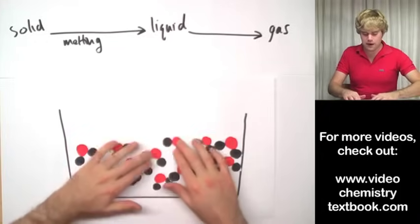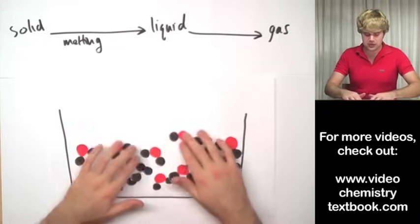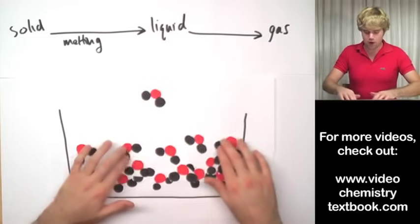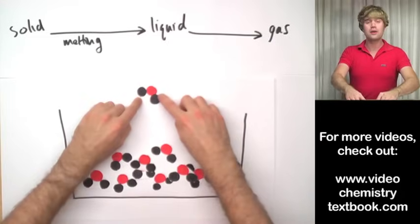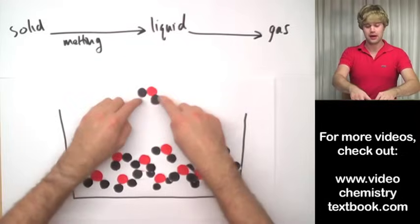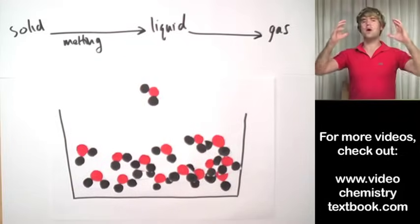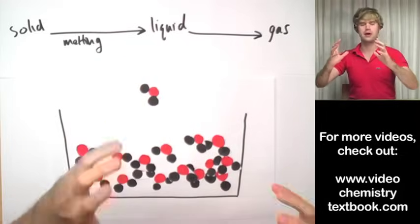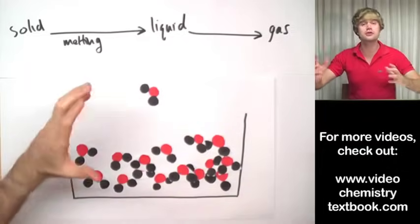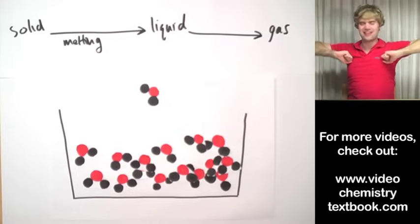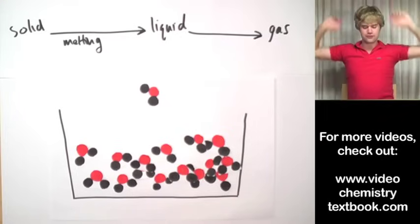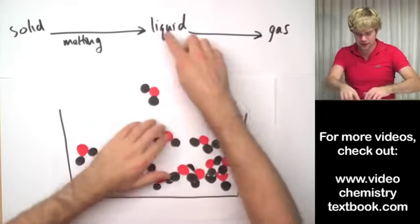that every once in a while, one of them is going to be moving so fast that it's able to jump right out of the liquid. And when it does so, it's going to become a gas. It's going to jump out here into the air. This is like a wild, crazy mosh pit that is moshing so hard and so fast that they can throw people out of the mosh pit and they fly out into the air and just fly away.